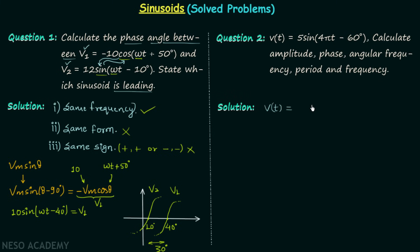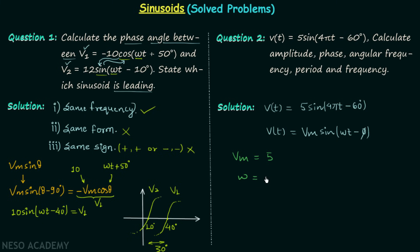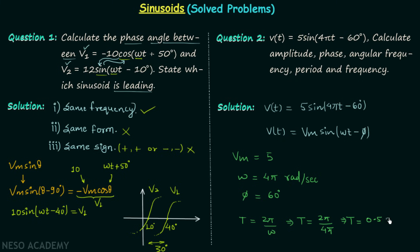We have V(t) = 5·sin(4πt - 60°). Comparing with the standard form, Vm, which is the amplitude, is equal to 5. ω, the angular frequency, is equal to 4π radians per second. φ, the phase, is equal to -60 degrees. The time period T is equal to 2π divided by ω, so T = 2π / 4π = 0.5 seconds.